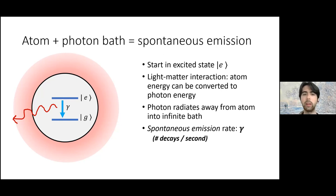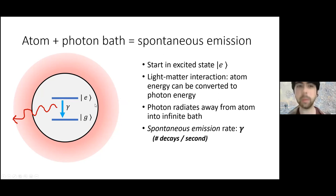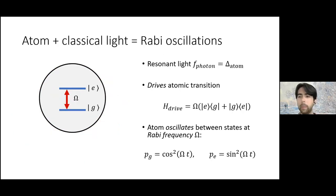When a photon bath is added to a simple atomic system, the most important phenomenon is spontaneous emission. If the atom starts in the excited state, the light-matter interaction allows energy to convert from the internal excited state into photon energy. Because the bath is so huge, that light energy is immediately radiated away. The atom decays from the e state to the g state at rate γ.